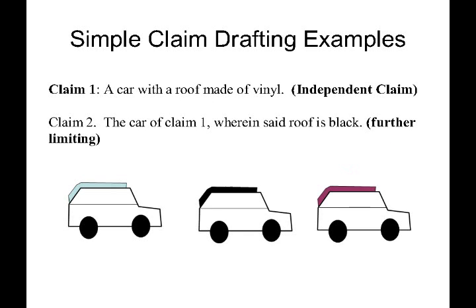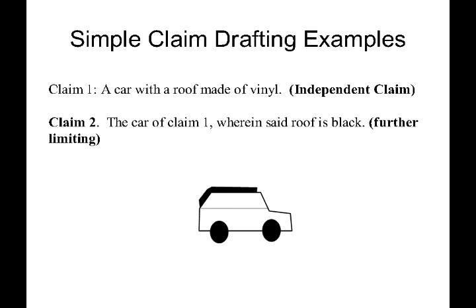That gives advantages in styling flexibility, because the vinyl can be fabricated in different colors and textures for a unique look. We then add claim 2, which recites that the roof is black. Claim 1 is referred to as an independent claim — it stands on its own and does not refer to any other claims. Claim 2 is a dependent claim; it depends from claim 1. Claim 2 is a further limiting claim — it basically says, take everything in claim 1 but further restrict it to a particular color of roof, in this case black. Note that normally claiming objects of a particular color is not done; this is just an example to show how claim 2 is more restrictive than claim 1.